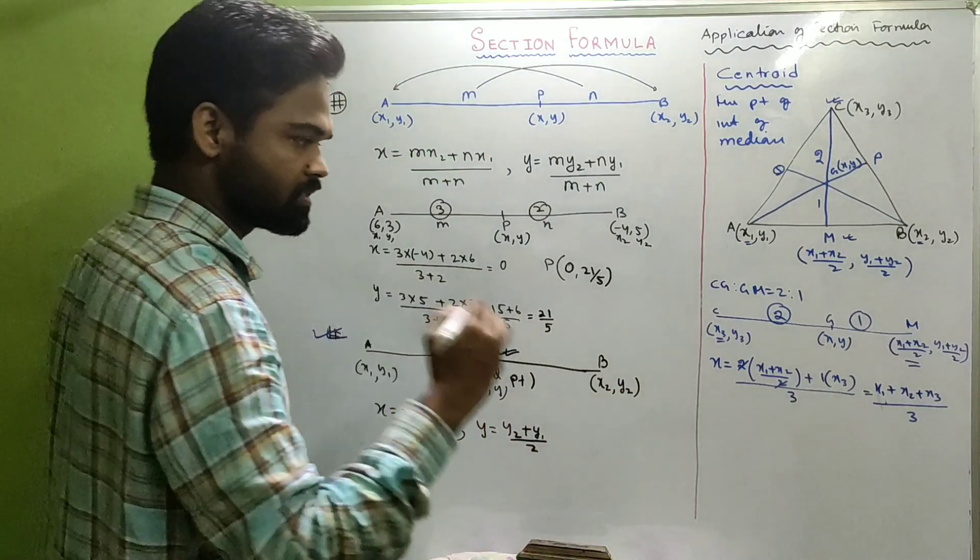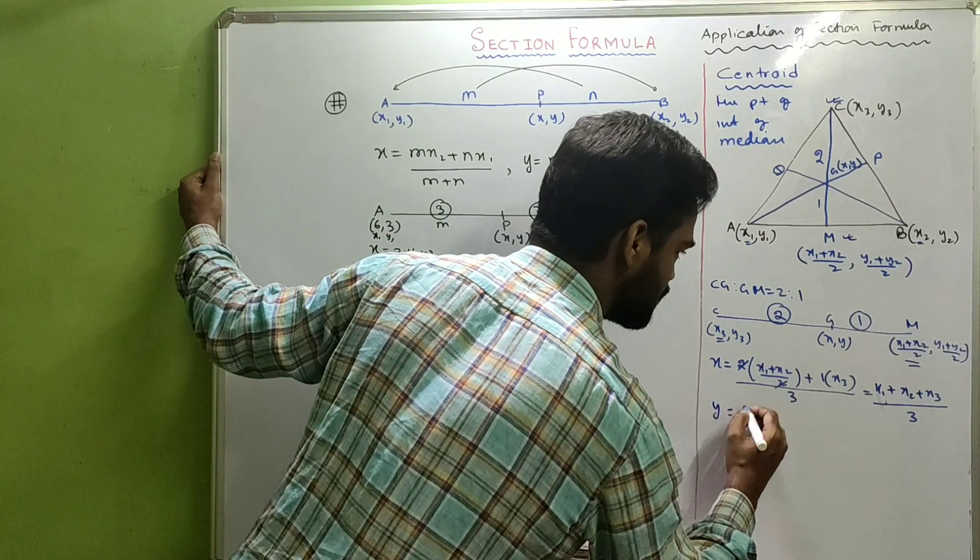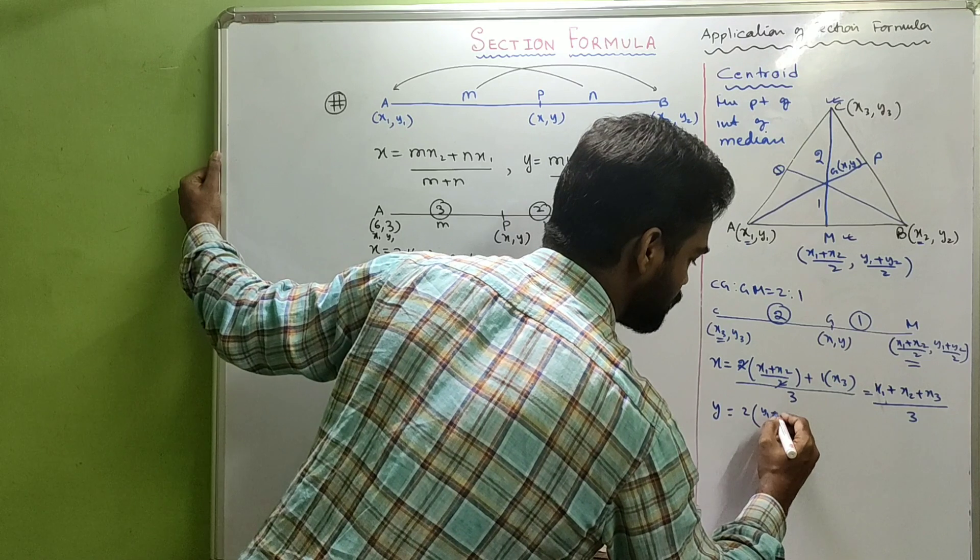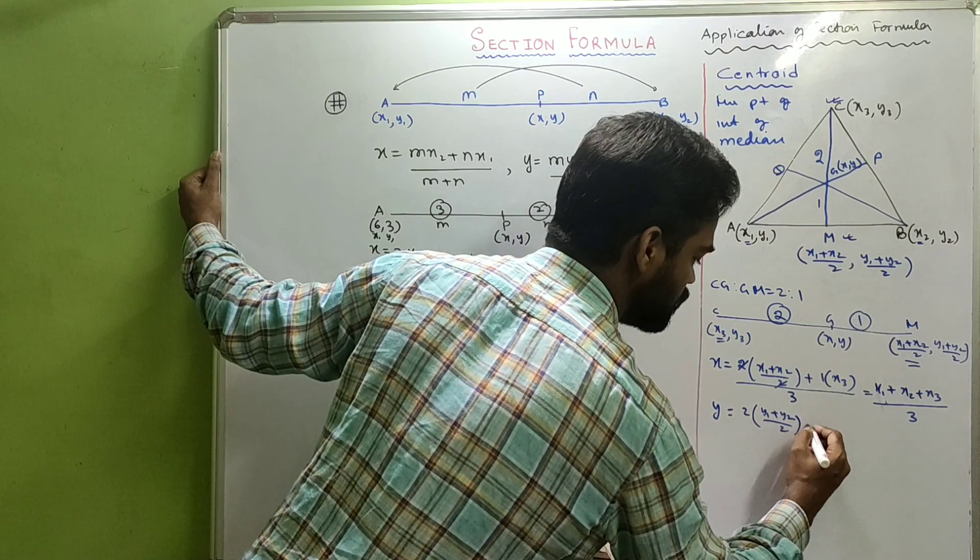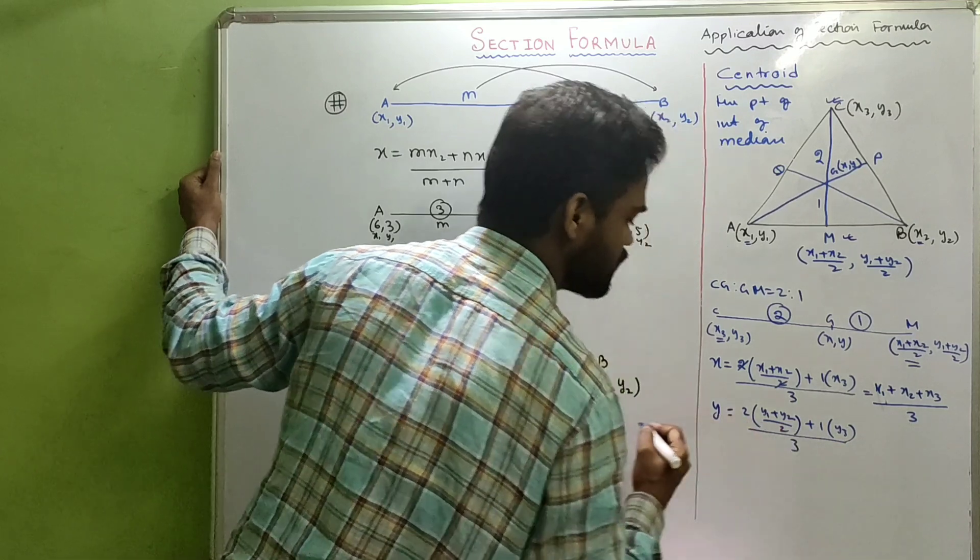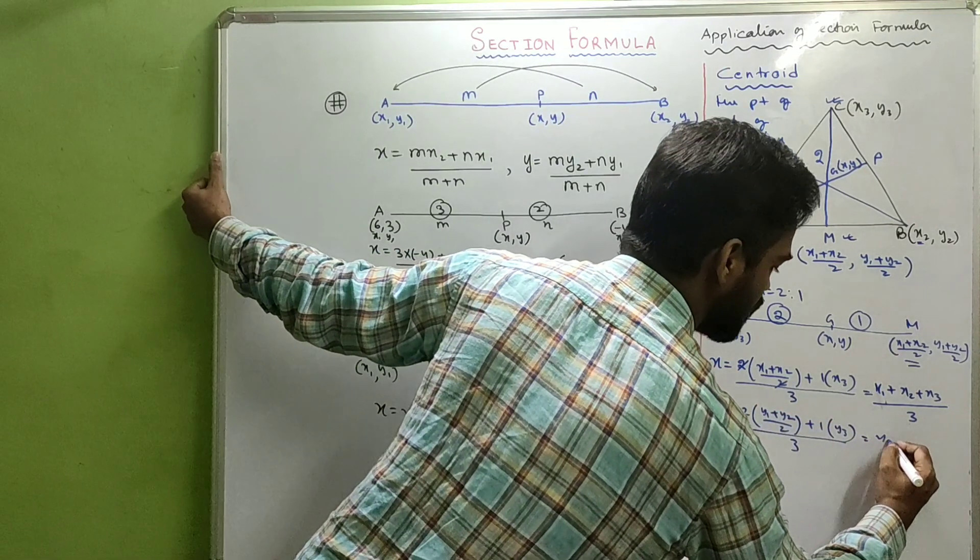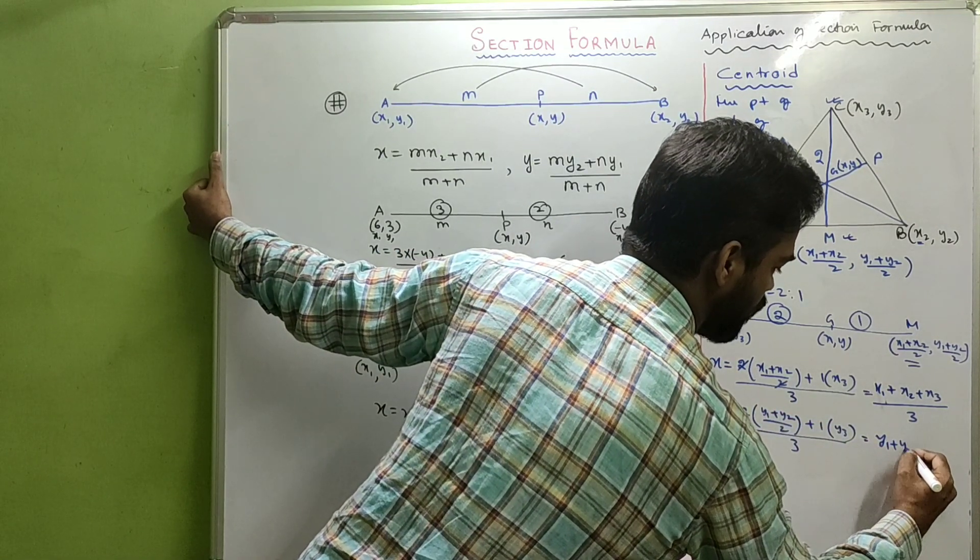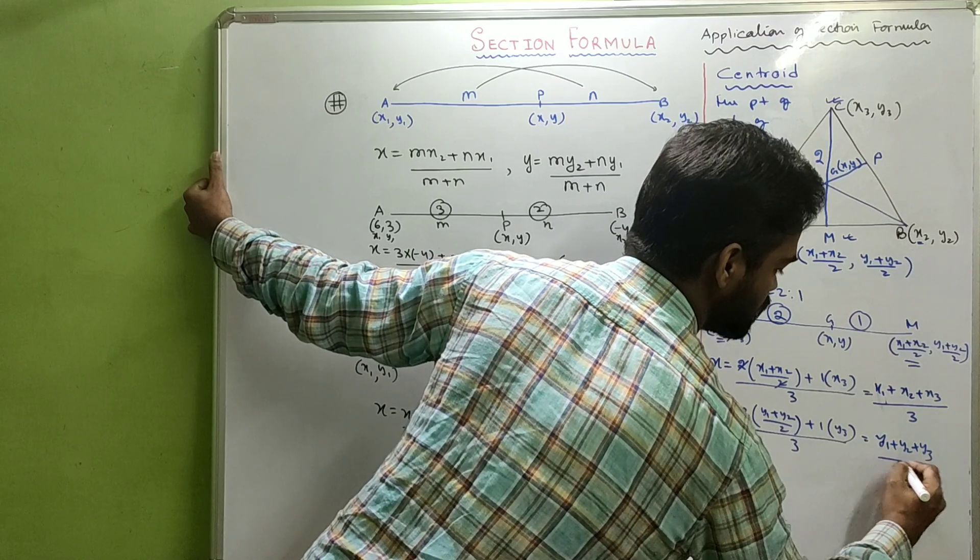Now, similarly, if you calculate Y, it will be twice of Y1 plus Y2 by 2, plus 1 time Y3, by 2 plus 1, that's 3, which is equal to Y1 plus Y2 plus Y3 by 3.